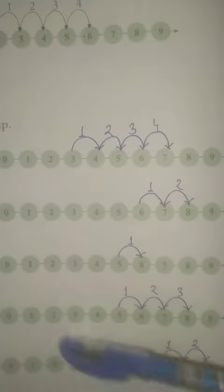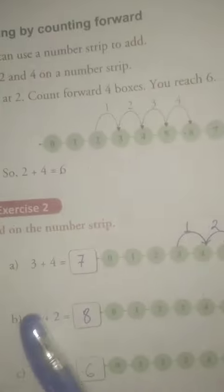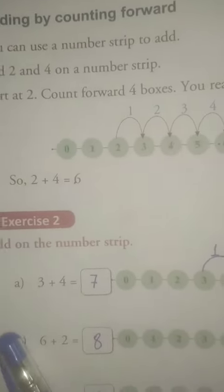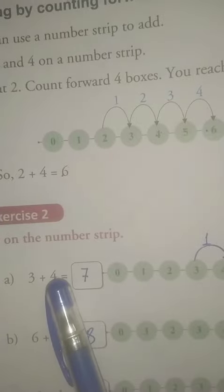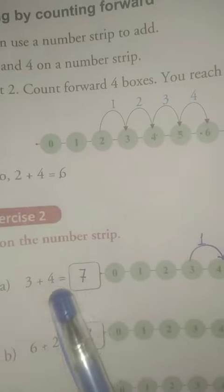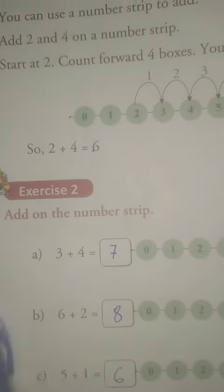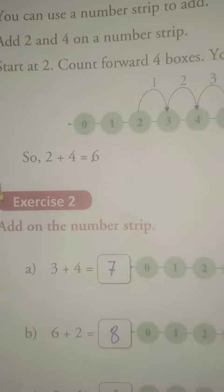Here number strips are already given. You just what you have to do? You have to start at the first number and count forward the second number. In exercise number 2, move to exercise number 2, children.